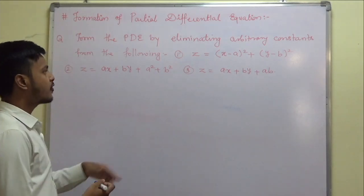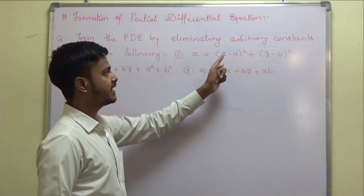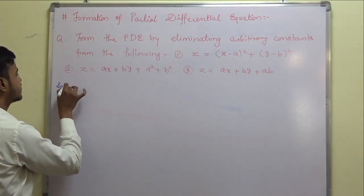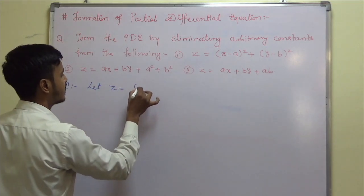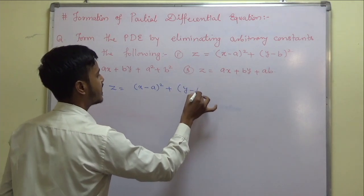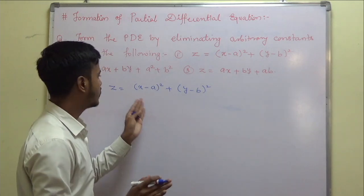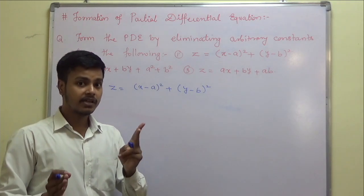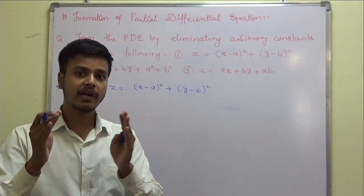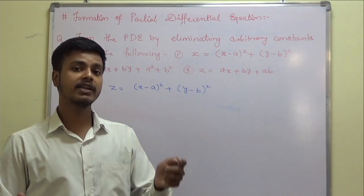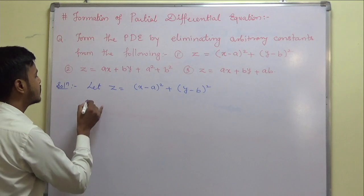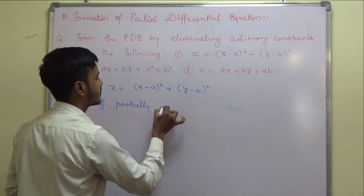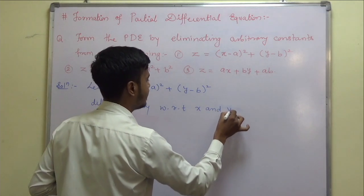We are given some equations and we have to form the partial differential equation by eliminating the arbitrary constants. Let us take the first problem: z equals (x minus a) squared plus (y minus b) squared. Whenever you are doing differentiation in this topic, remember there are two independent variables, x and y. When differentiating with respect to x, take y as constant, and when differentiating with respect to y, take x as constant. Differentiating partially with respect to x and y, we get: